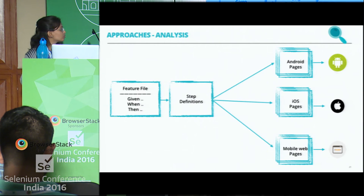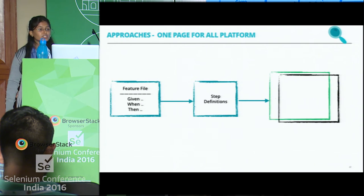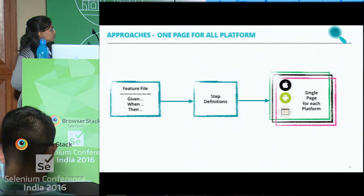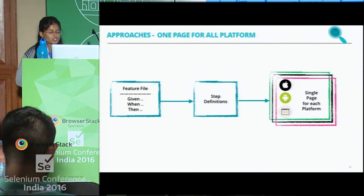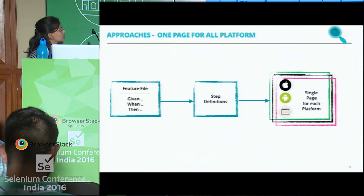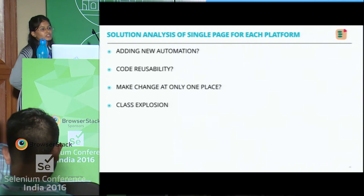If I look at the root cause of this problem: we have different pages for each platform. So what if we had a single page that represents all platforms? Let's analyze this approach against the expectations. If I have to add any new test, I just update one page. Same for any change — I'm not repeating myself, so I achieve reusability. Let's go with this approach and see how the journey goes, because this seems to meet our expectations.